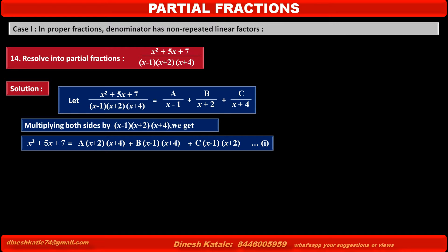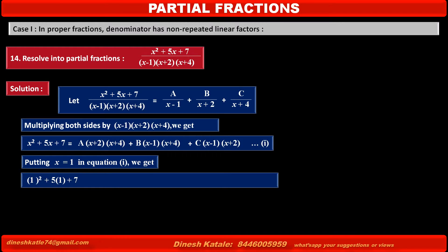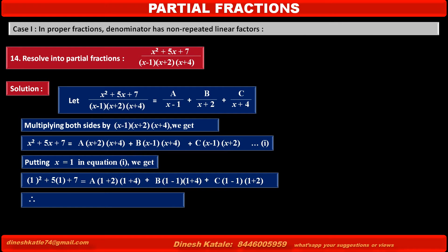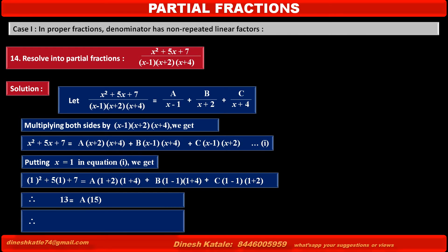To find the value of A, put x equals 1 in equation 1. The left hand side becomes 1 squared plus 6 times 1 plus 7. The right hand side: the first term becomes A times (1 plus 2)(1 plus 4), while the second and third terms vanish since (1 minus 1) equals 0. Solving, we get 13 equals 15A, therefore A equals 13 upon 15.